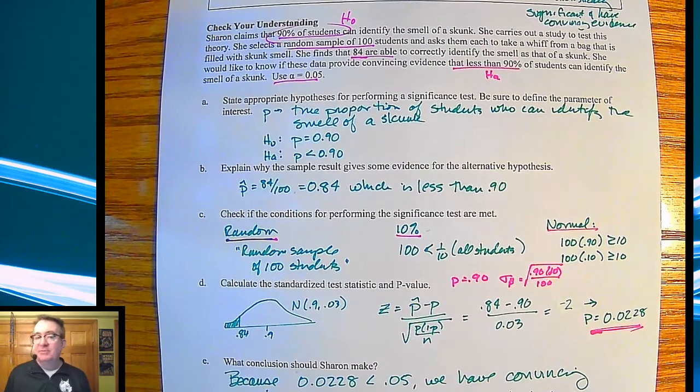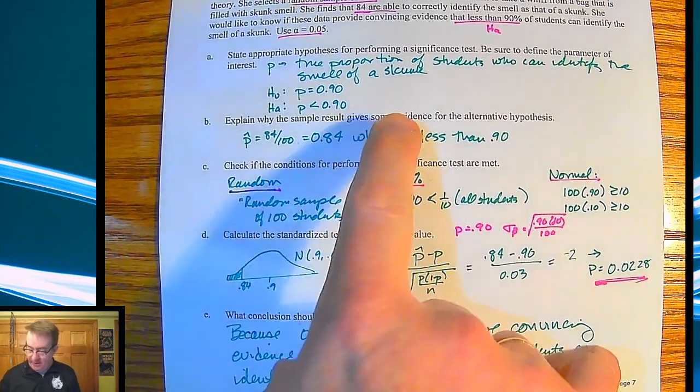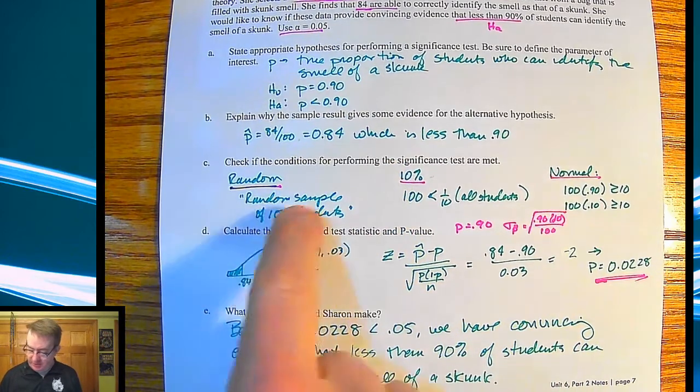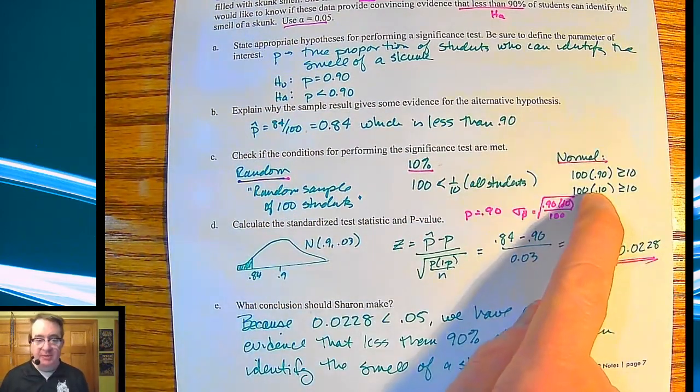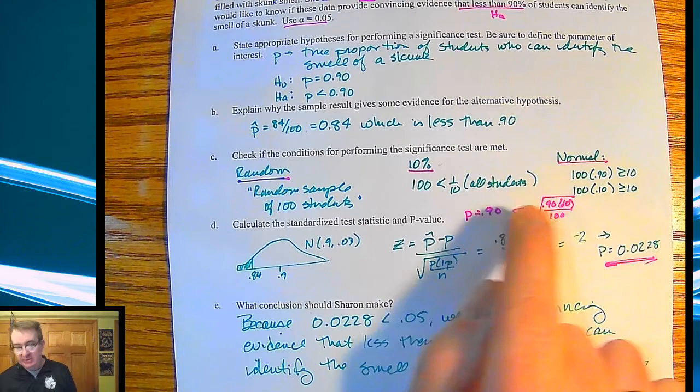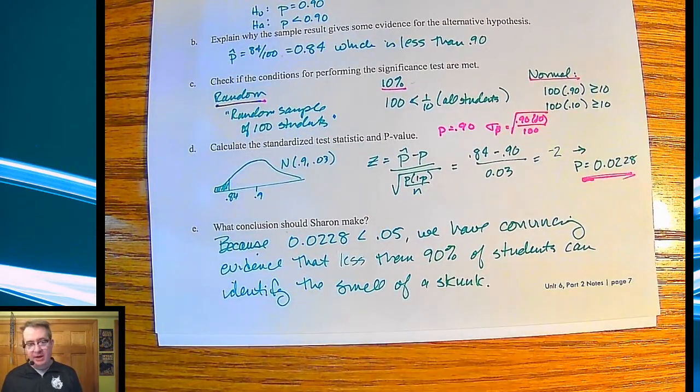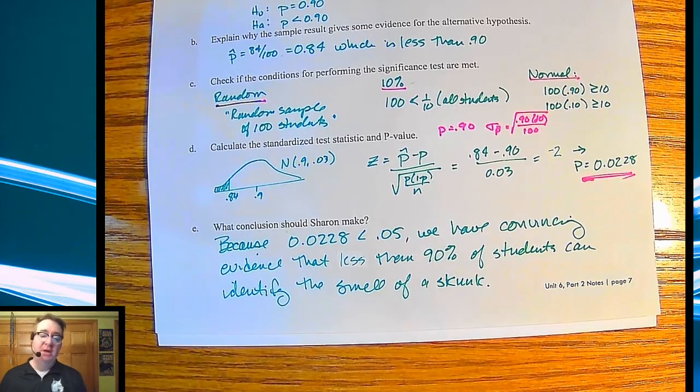And again, it's not that different from stuff that we've already done. This we were doing in the first couple sections. This we played around with before. These we have definitely played around with before with our confidence intervals. We have done Z-scores before and found the P-values from that. So now we're just putting it all together and coming up with a conclusion.